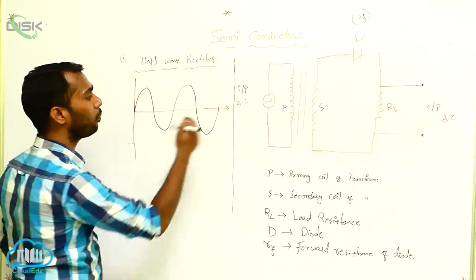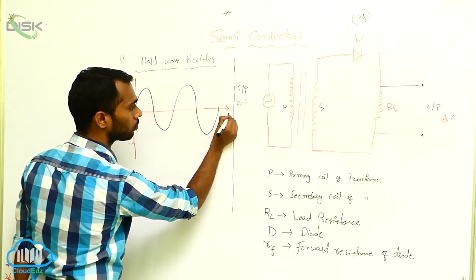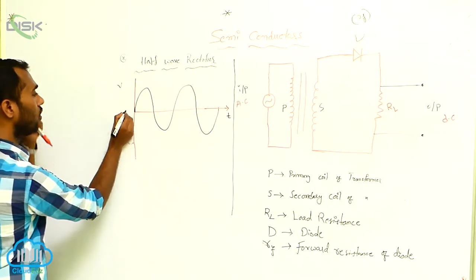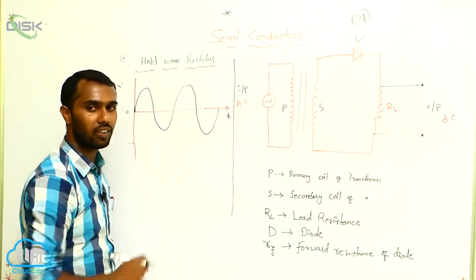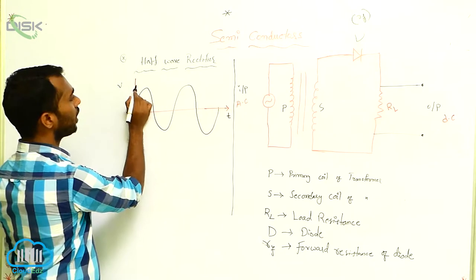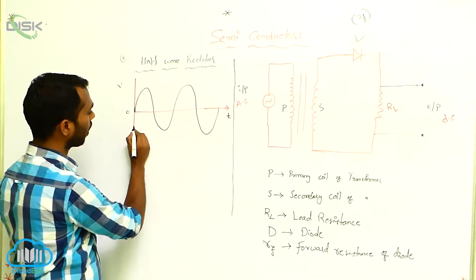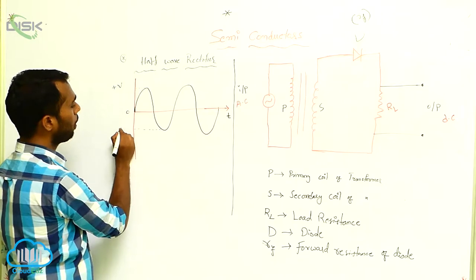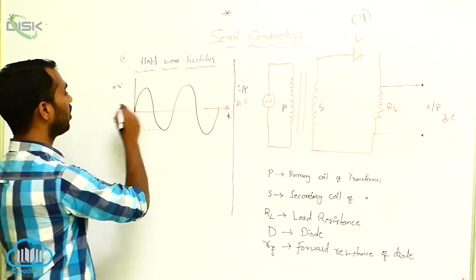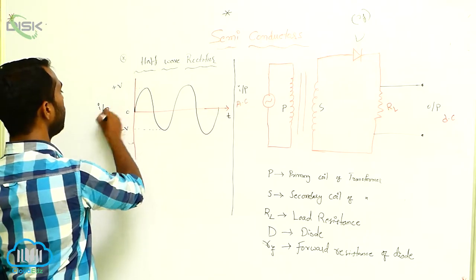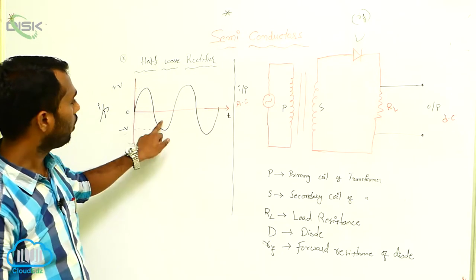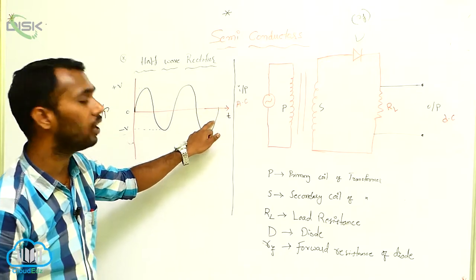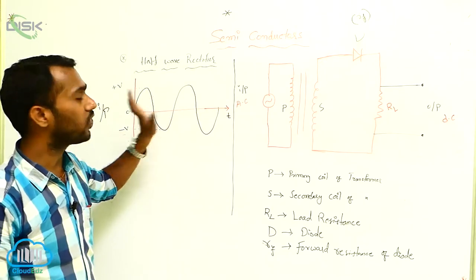On the x-axis, I am taking the time. On the y-axis, I am taking the voltage. It is the zero. This one is a positive potential and this one is a negative potential — it is a plus V and this one is a minus V. This is called input. Positive half cycle, negative half cycle — two directions. That's why it is AC current.